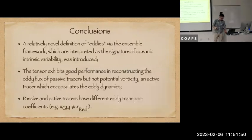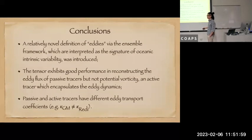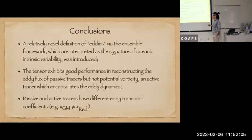I'll do my last slide. What I wanted to talk about here is we've introduced a relatively novel definition of eddies using the ensemble framework. The tensor exhibits good performance in reconstructing eddy flux of passive tracer but not potential vorticity, which is in my opinion the more fun part of actually trying to parameterize the eddy dynamics. For operational purposes, it seems that passive and active tracers have different eddy transfer coefficients, meaning kappa_GM and kappa_Redi are not the same, which modeling communities tend to do. I will finish at that. Thank you.